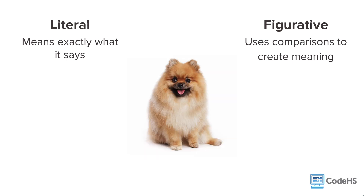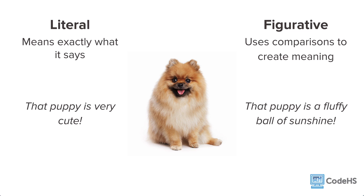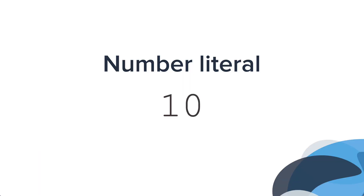For example, let's say there is a very cute puppy. A literal description of the puppy could be, 'that puppy is very cute' — this means exactly what it says, the puppy is cute. On the other hand, a figurative description of the puppy could be, 'that puppy is a fluffy ball of sunshine,' where the puppy is being compared to a ball of sunshine to show how cute it is. Going back to programming, a literal in Java is like literal language — it is exactly what it is.